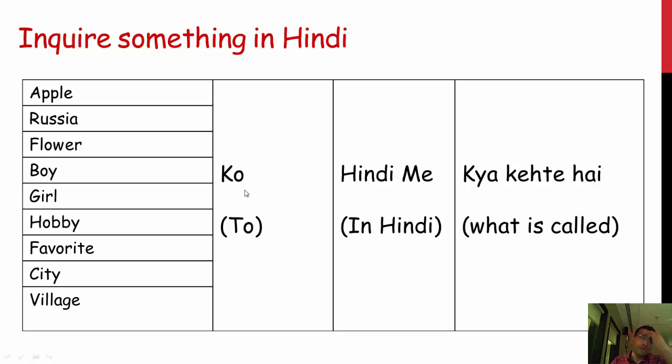In Hindi, I've broken it down into four steps. You will say: ko Hindi mein kia kehte hain — meaning 'what is it called in Hindi?' For example, 'What is apple called in Hindi?' would be: apple ko Hindi mein kia kehte hain. 'What is Russia called in Hindi?' would be: Russia ko Hindi mein kia kehte hain. Another example — flower: flower ko Hindi mein kia kehte hain.